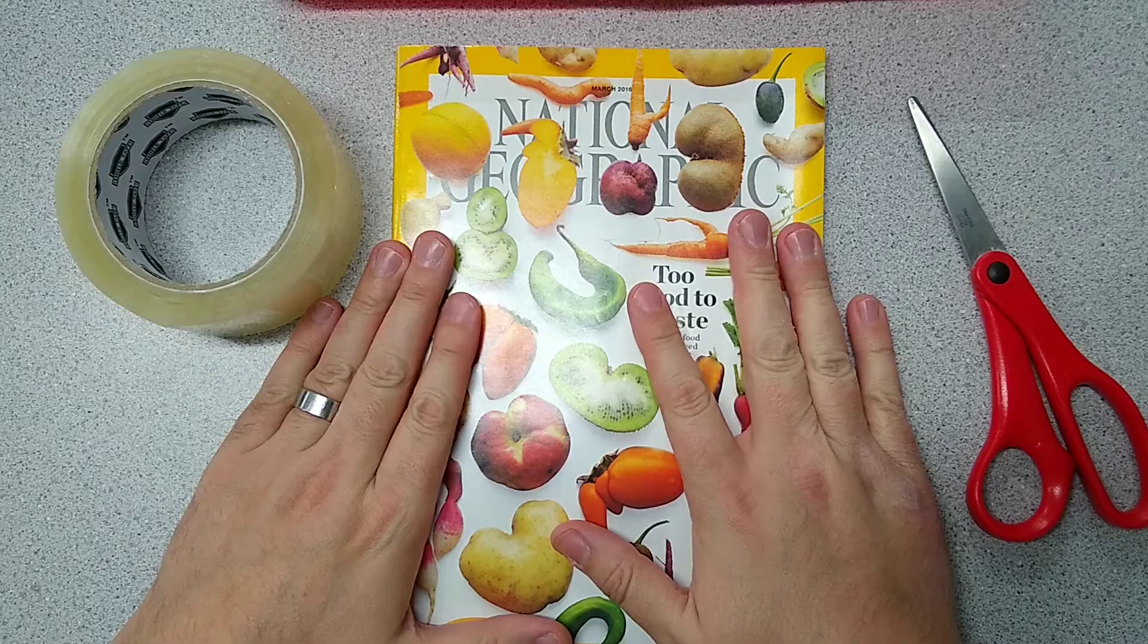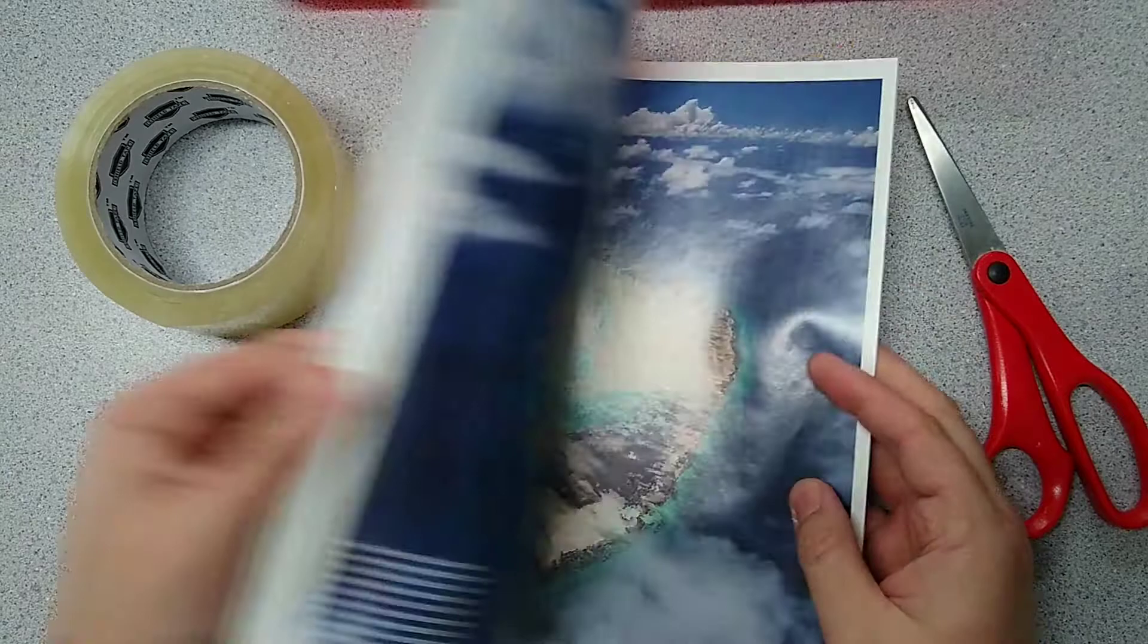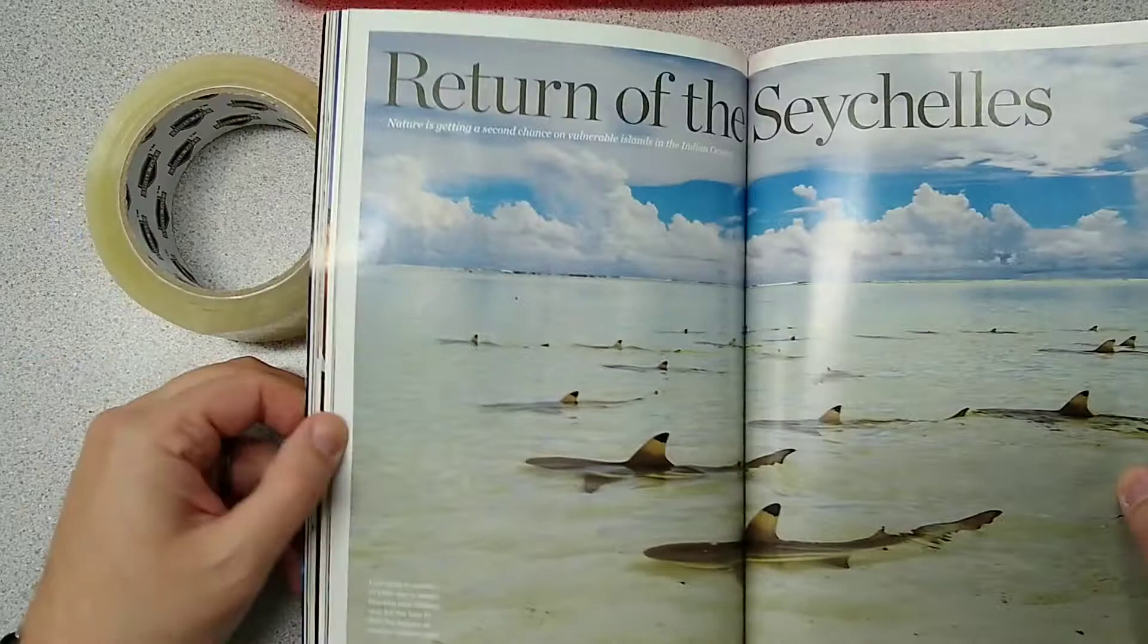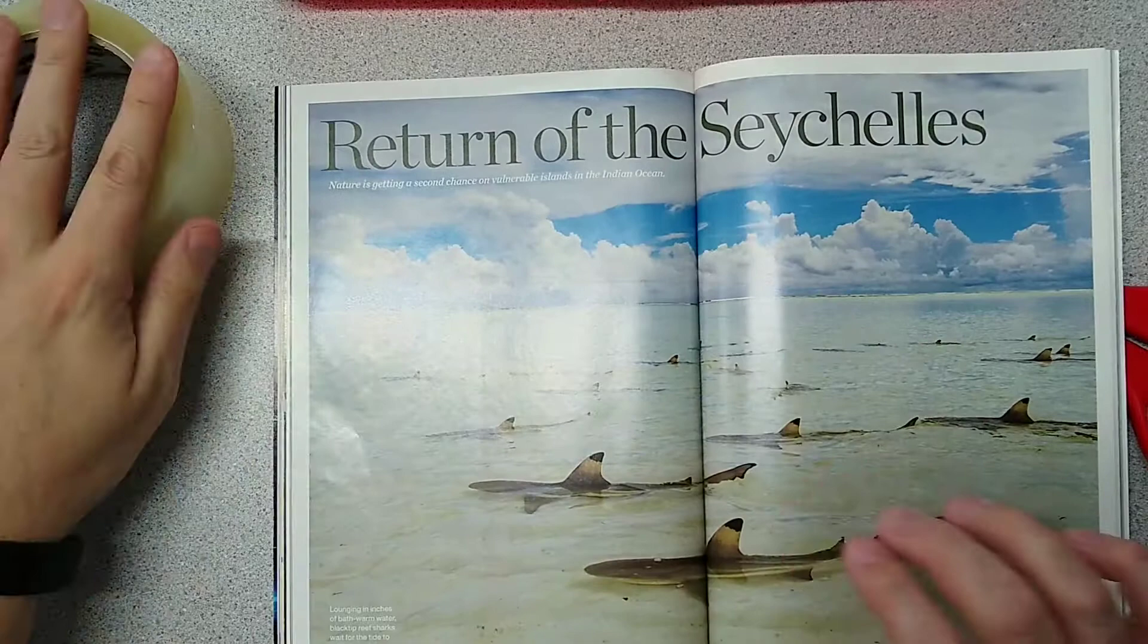The first step you need to complete is to find a picture that you like. These National Geographics are great. They have some really great photography. And we can find a picture that you would like to transfer onto a piece of packing tape.